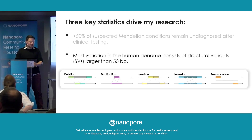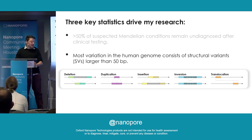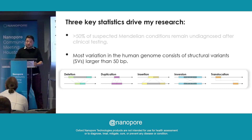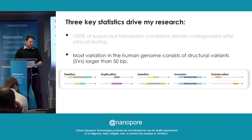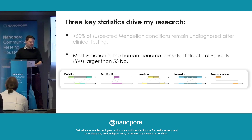The second is that most variation in the human genome consists of structural variance larger than 50 base pairs. This is to say that if you compared any individual genome to the reference genome, it's not going to be SNPs and indels that cause the most difference between the two — it's deletions, duplications, insertions, inversions, and translocations that are bigger than 50 base pairs.